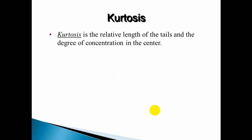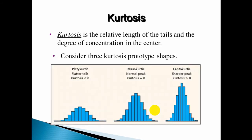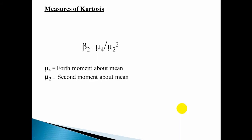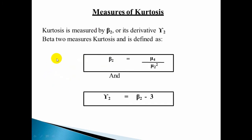Kurtosis is the relative length of the tails and the degree of concentration in the center. The three kurtosis prototype shapes are: platykurtic (flat tails, kurtosis less than zero), mesokurtic (normal peak, kurtosis equal to zero), and leptokurtic (sharper peak, kurtosis greater than zero). We can calculate the measure of kurtosis by using beta 2.